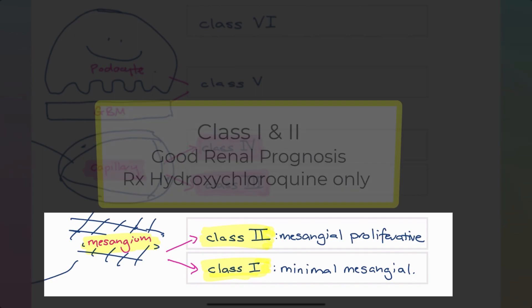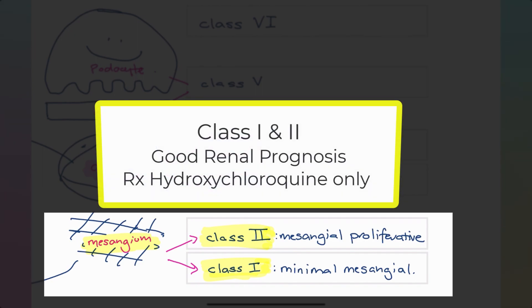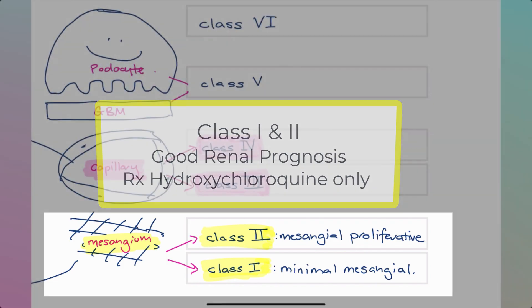Interestingly, class one and two have a very good renal prognosis and they don't require specific immunosuppression. So you'll probably have these patients on hydroxychloroquine or also known as Plaquenil. But any additional immunosuppression will be guided by other manifestations of lupus outside the kidney.